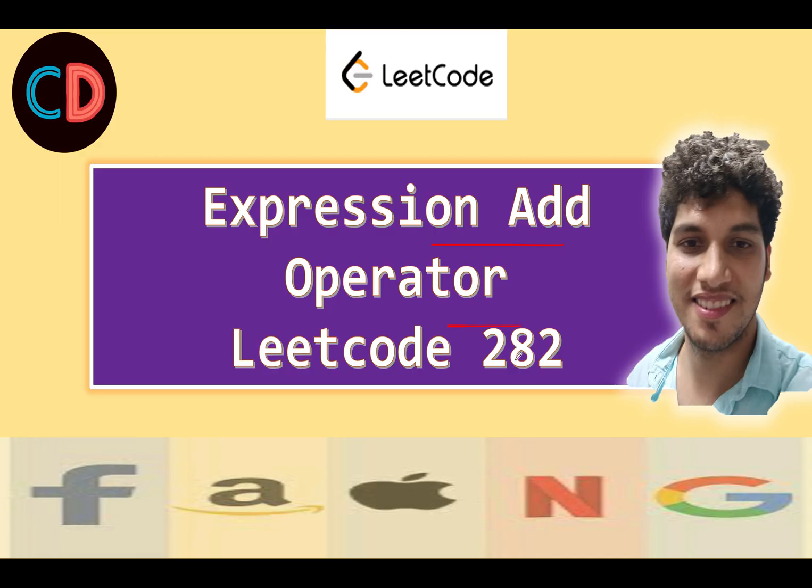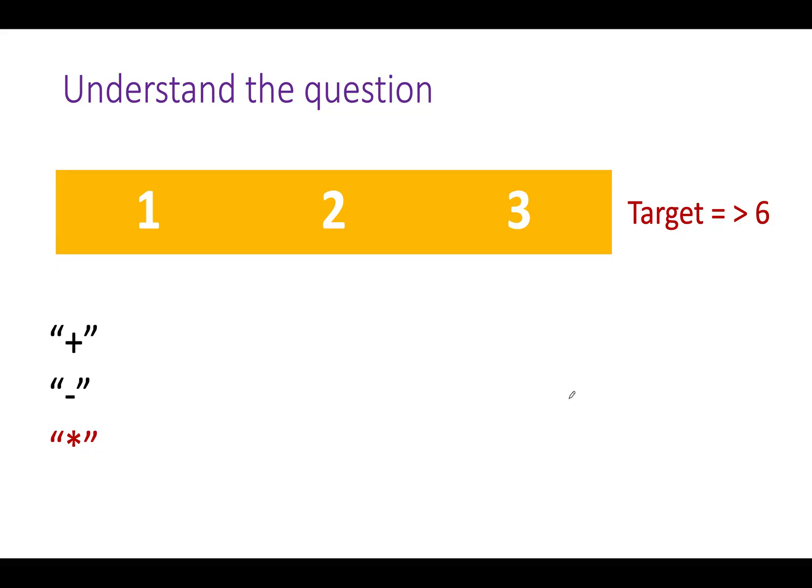This is LeetCode 282 Expression Add Operators, a hard question. The approach we follow is backtracking, and we have solved plenty of backtracking questions over the past year. How did I conclude we use backtracking? Because the question specifies we need to generate all possibilities — whenever you see that phrase, backtracking is one strong candidate. Let's understand the question once more.